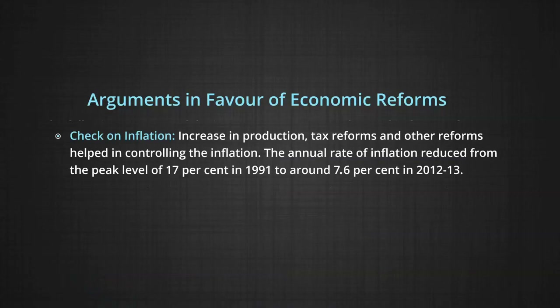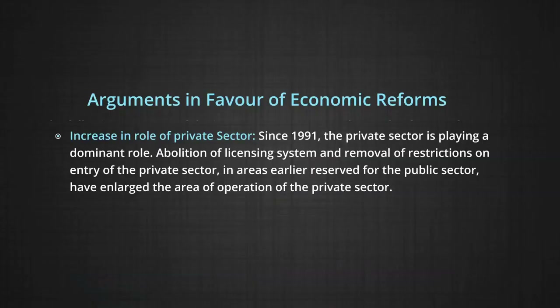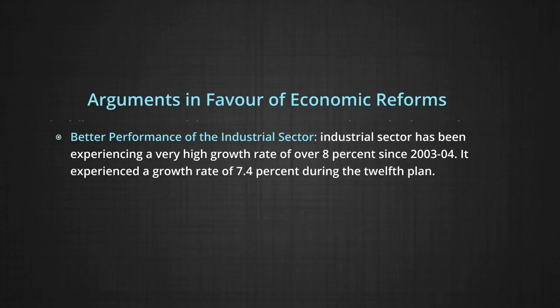Number four: check on inflation. Increase in production, tax reforms, and other reforms helped in controlling inflation. The annual rate of inflation reduced from a peak level of 17 percent in 1991 to around 7.6 percent in 2012-13. Number five: increase in the role of private sector. Since 1991, the private sector is playing a dominant role. Abolition of the licensing system and removal of restrictions on entry of the private sector have enlarged its area of operation. The industrial sector has been experiencing a high growth rate of over 8 percent since 2003-04, with 7.4 percent growth during the 12th plan period.